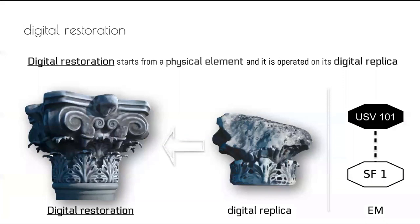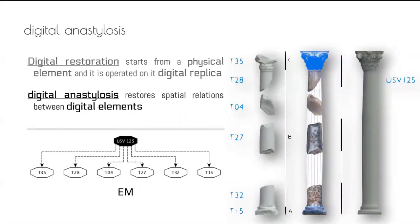For digital restoration, the annotation on the right uses octagons for elements not in situ. For example, a digital replica of a capital block found inside the stratigraphy but not in its original place is a special find, represented by an octagon. Its digital restoration is also an octagon but with a black background — black background means virtual stratigraphic unit, white background means a real tangible object. We can create a digital analysis with multiple special finds.